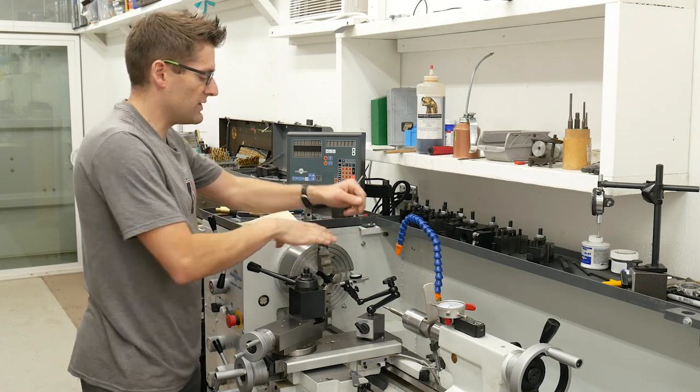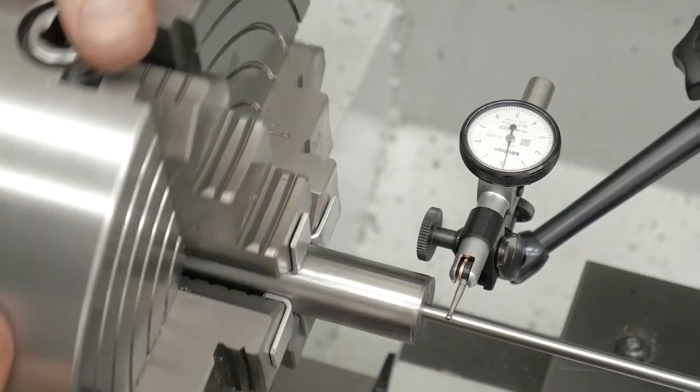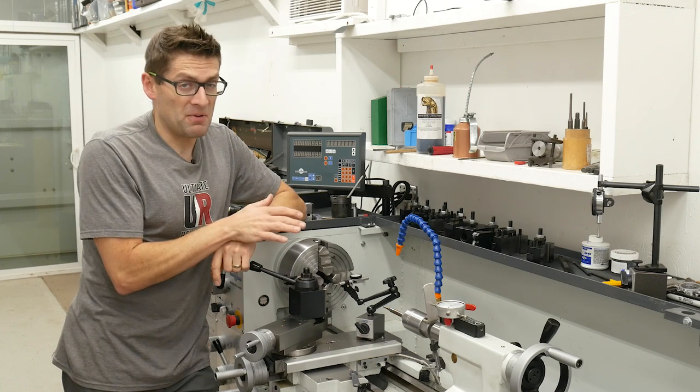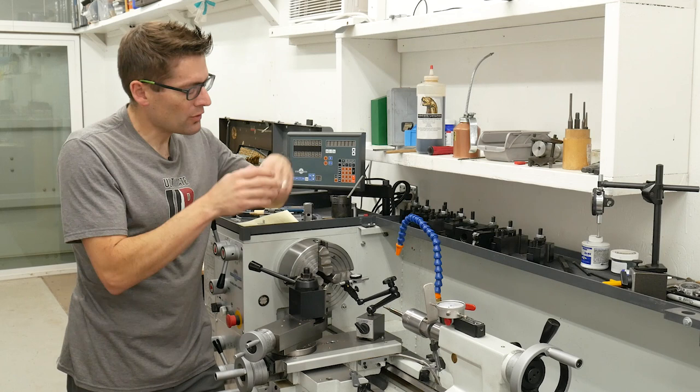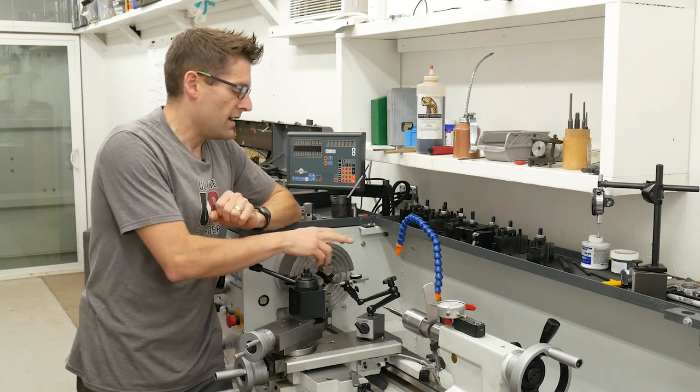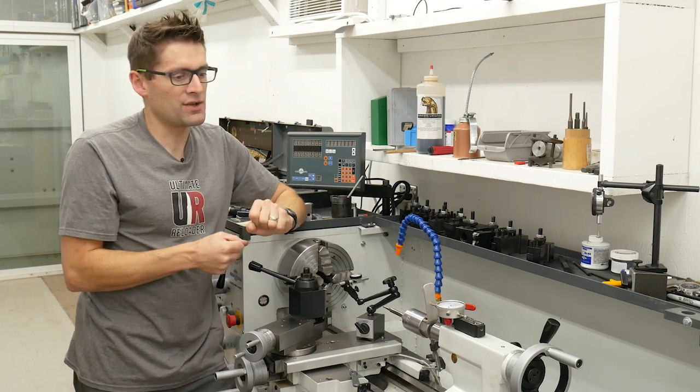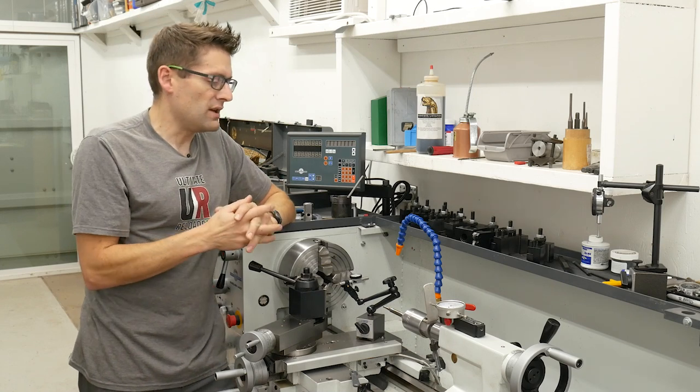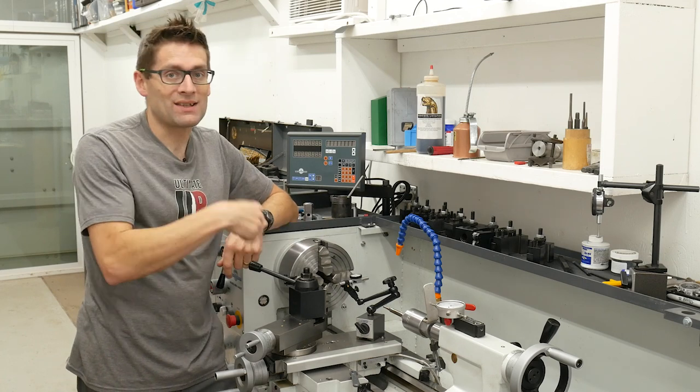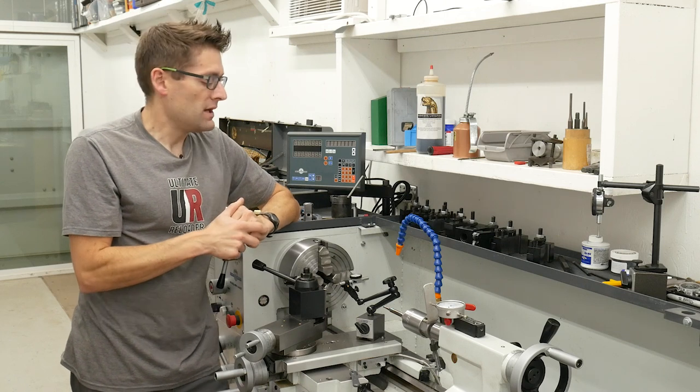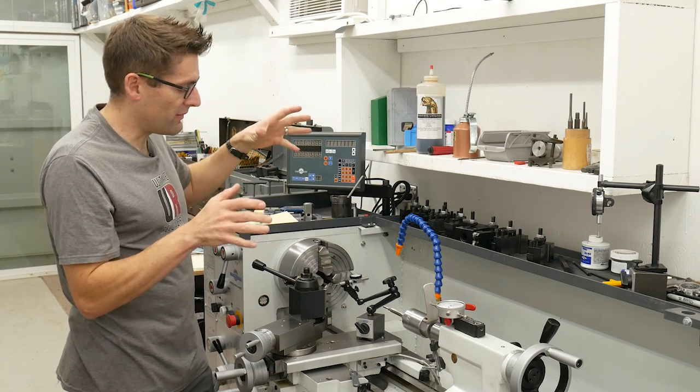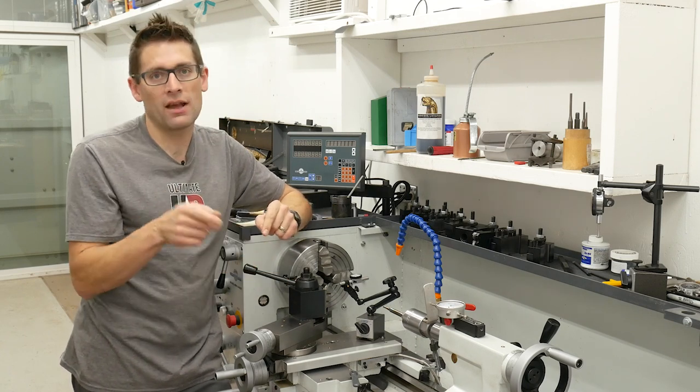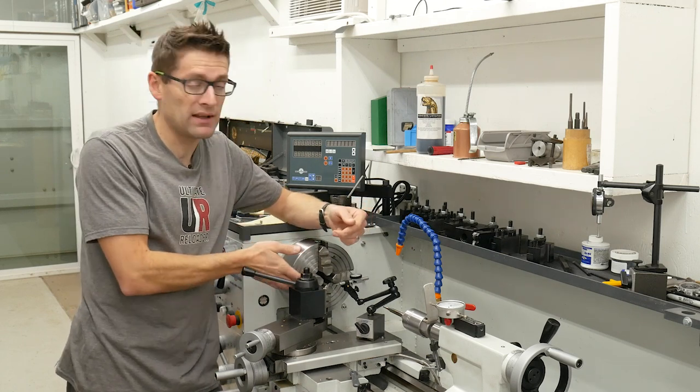I kept going back between those two points using the chuck jaws for radial alignment and the outboard spider for angular alignment. One adjustment influences the other, so you've got to go back and forth until they both agree. Once everything is dialed in, tighten those chuck jaws while splitting the difference on each opposite jaw to maintain zero. You need enough tension so the muzzle won't spin, but not so much that you deform it. It's a feel thing, which is why it's great to practice on a practice section of barrel.